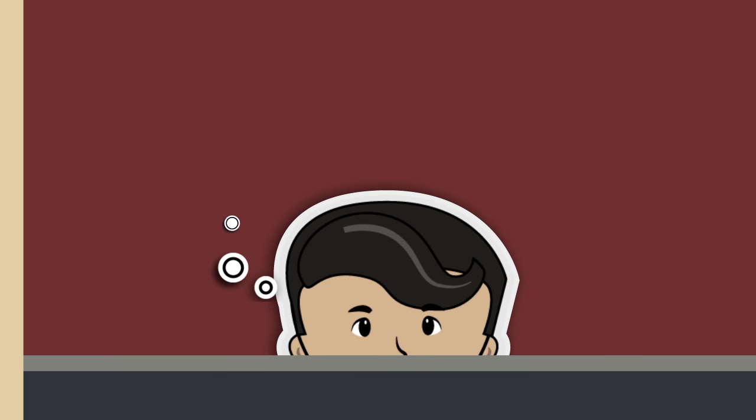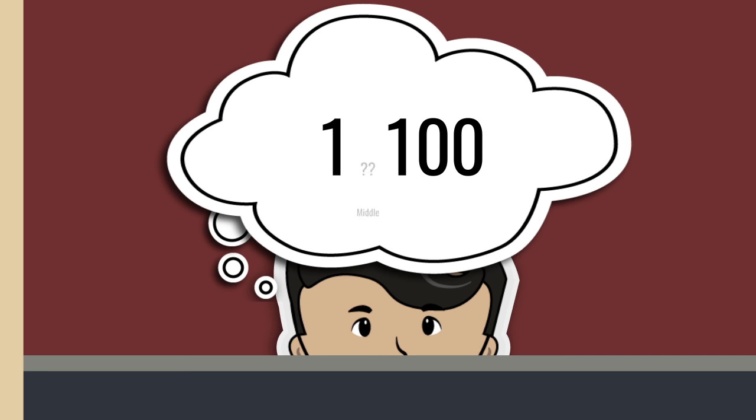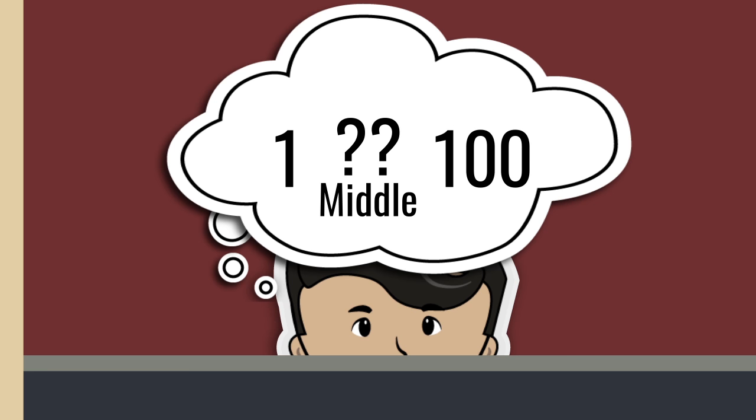Turns out, there is a fast way to guess a number. Guess a number directly in the middle of the range of possible values, and I'll tell you if the number I'm thinking of is higher or lower.